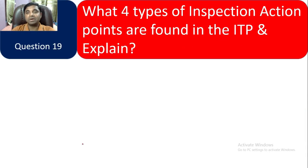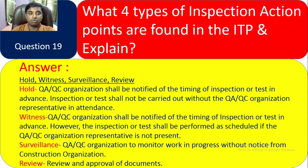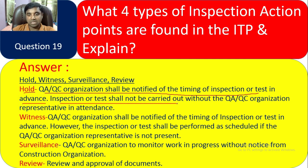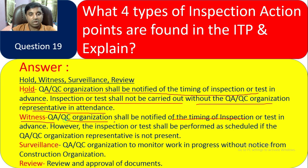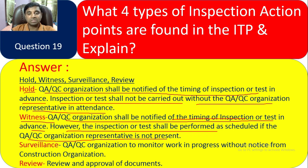Question 19: What four types of inspection action points are found in an ITP? The four types are: Hold — the QC organization shall notify the client in advance; inspection shall not be carried out without the QC representative present. Witness — QC organization shall notify the client, but if the representative is not present the inspection may proceed as scheduled. Surveillance — QC organization monitors work in progress; no advance notice required. Review — only review or approval of documents and reports.